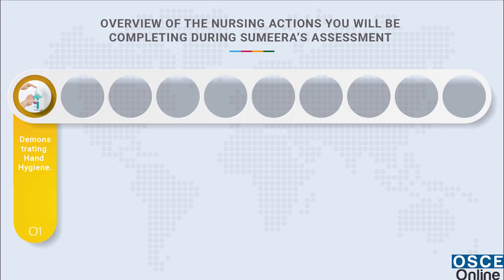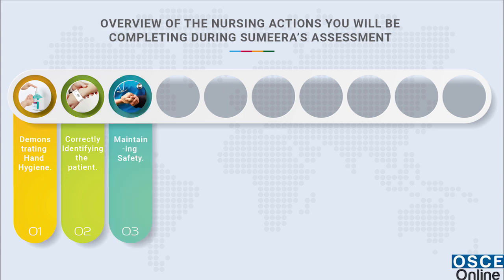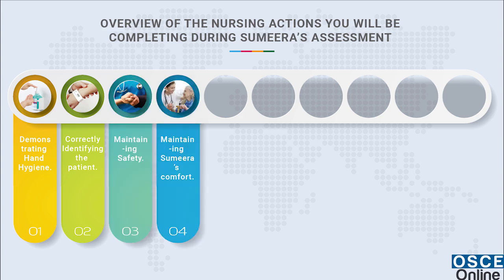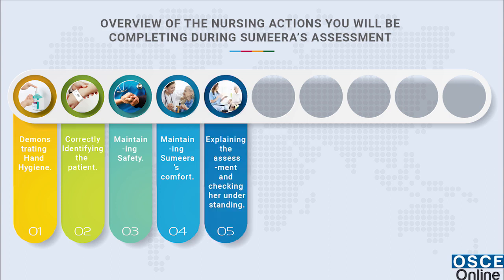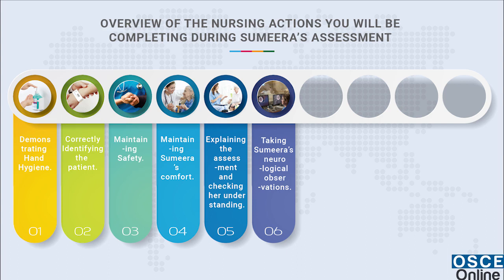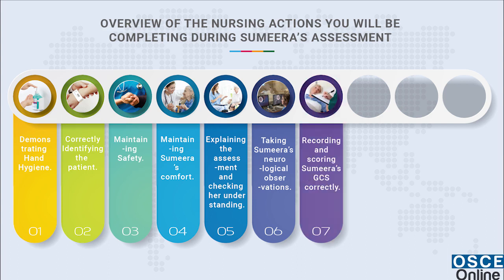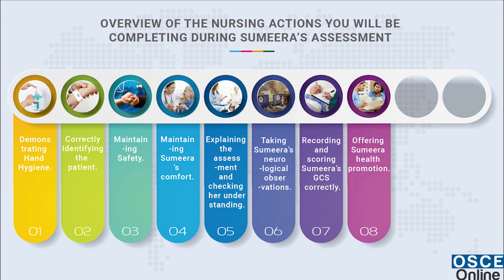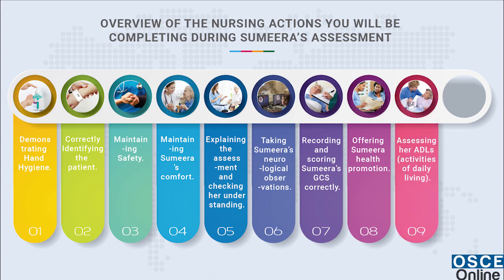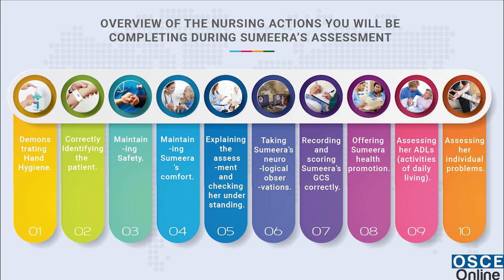Practical steps for the assessment include: demonstrating hand hygiene; correctly identifying the patient; maintaining safety; maintaining Sumira's comfort; explaining the assessment and checking her understanding; taking Sumira's neurological observations; recording and scoring Sumira's GCS correctly; offering health promotion; and assessing her activities of daily living and individual problems.